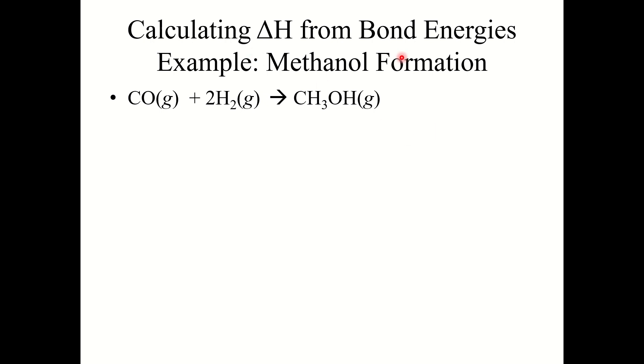Let's look at one more example. Here we're looking at methanol formation. We need to first draw the Lewis structure. Carbon monoxide is carbon to oxygen with a triple bond between them. We've got two H₂ molecules. And then with methanol, we've got three carbon to hydrogen bonds, one carbon to oxygen bond, and one oxygen to hydrogen bond.